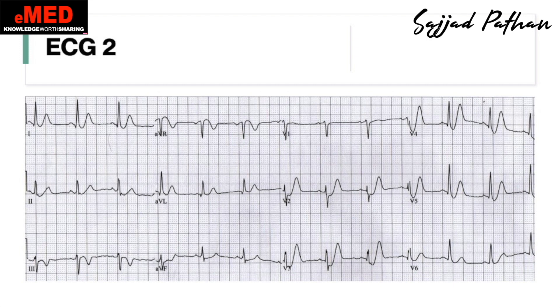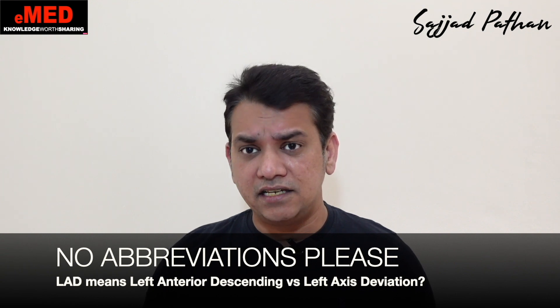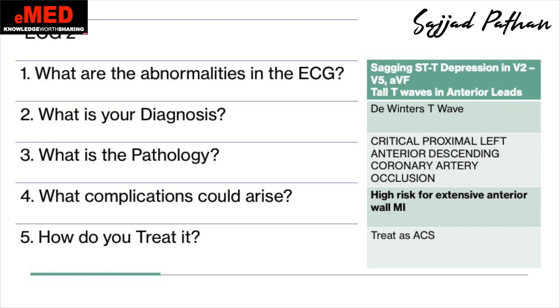What abnormalities do you see in this ECG? I see sagging ST depression in V1 to V5 and AVF, and there are tall T waves in the anterior leads. The diagnosis is De Winter's T waves. The pathology is again a critical proximal left anterior descending coronary artery occlusion. Please do not write abbreviations like LAD, as LAD could be taken as left axis deviation — write the full form: proximal left anterior descending coronary artery.